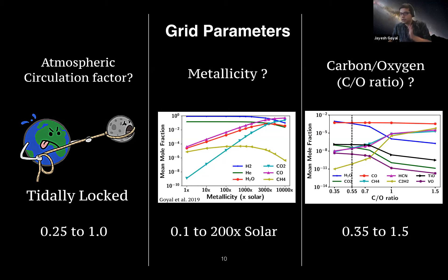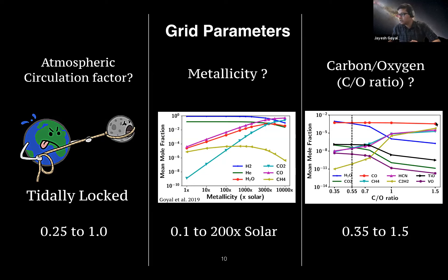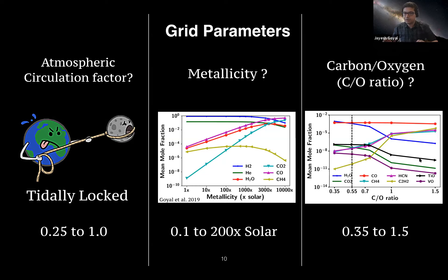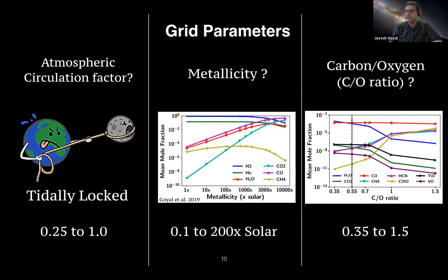The third parameter is the carbon-to-oxygen (C/O) ratio. We vary this from sub-solar (0.35) to solar (0.55) up to 1.5. The C/O ratio has a dramatic effect on atmospheric chemistry: CO abundance stays roughly constant, water decreases at high C/O, while HCN, methane, and other carbon species increase. Our grid uses 4 circulation factor values, 6 metallicity values, and 6 C/O ratio values.